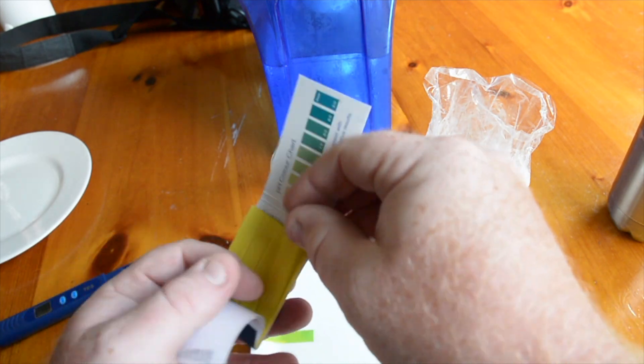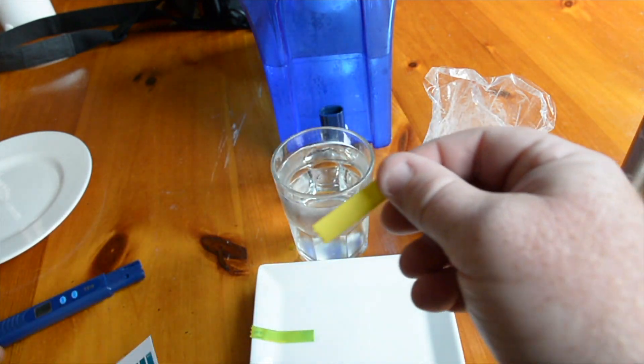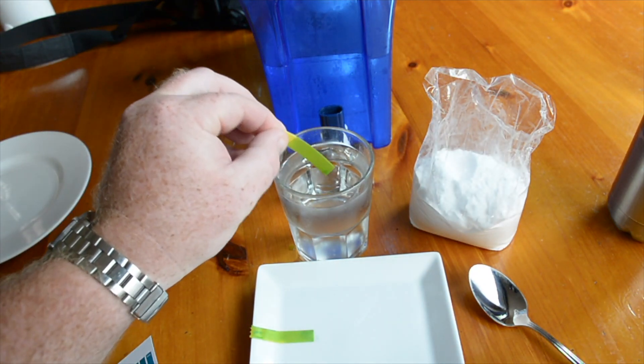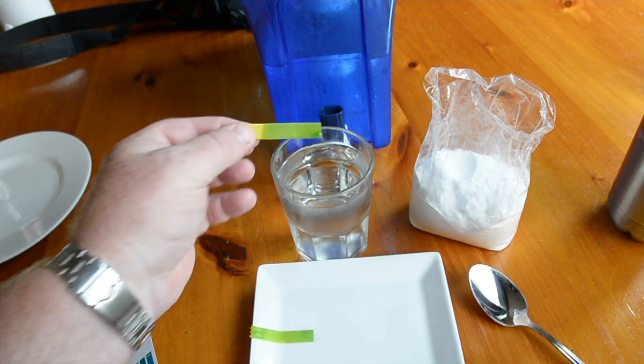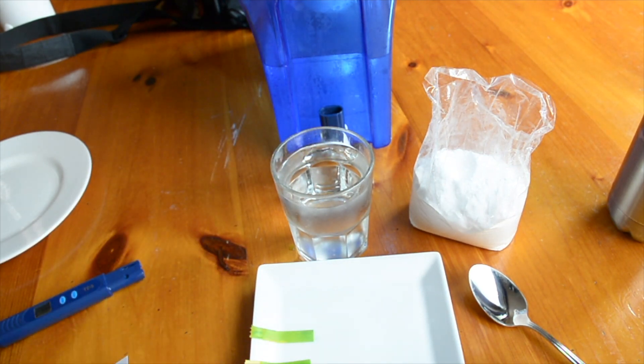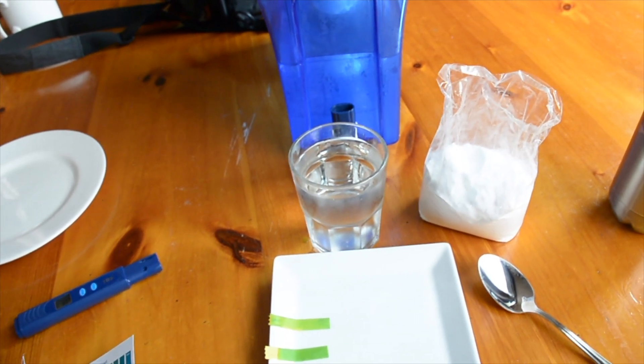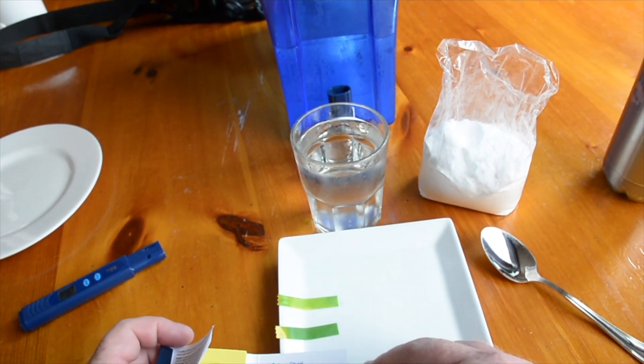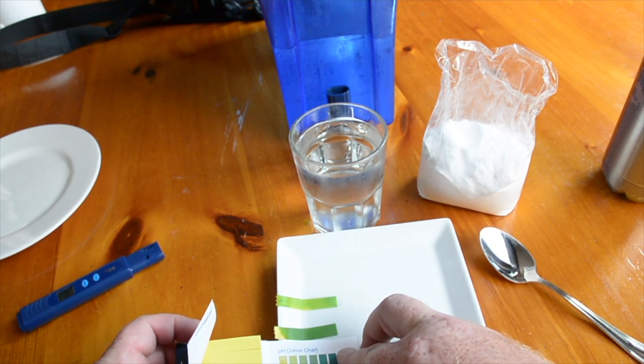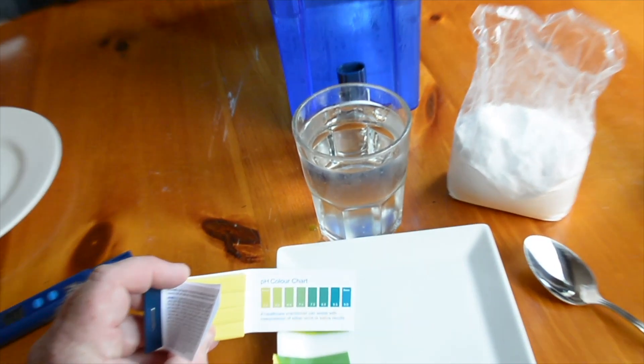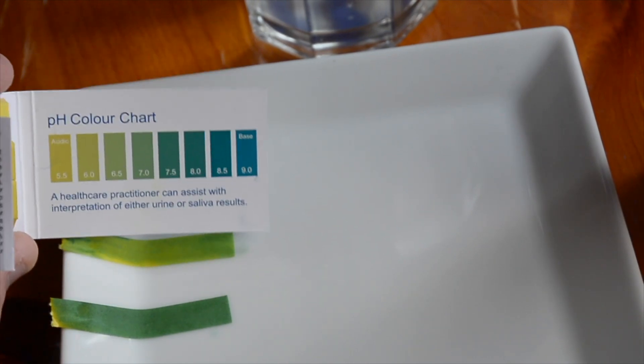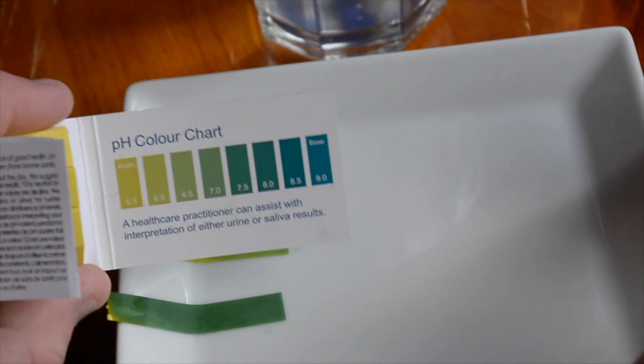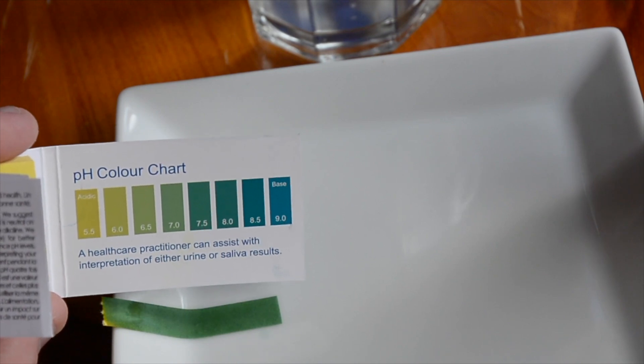And we'll try the pH test again. It's slightly darker, but actually it's turning quite a bit darker. I would say that's between a 7... Let's see if I can zoom in here. The first one I would still say is between a 6, actually it's a 6, and the second one with just a little bit of baking soda is closer to a 7.5.